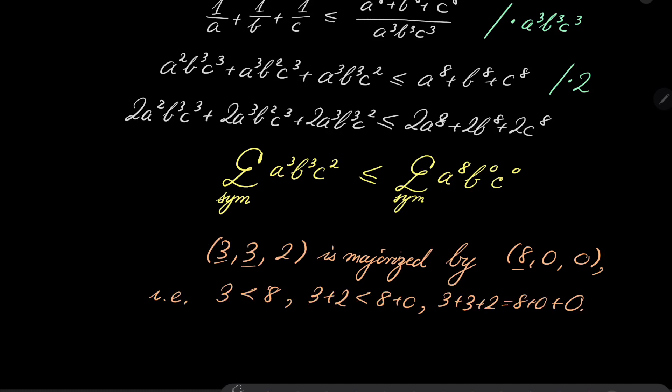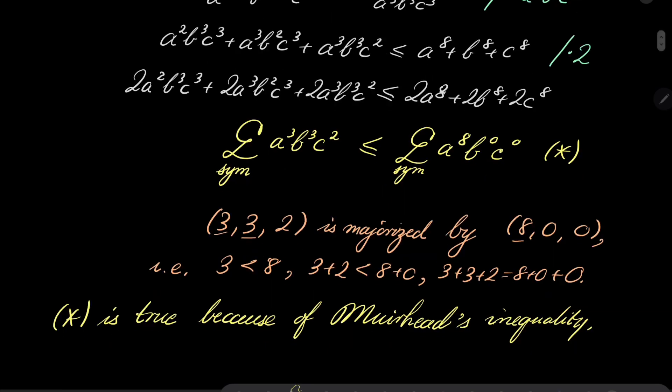So now we can use Muirhead's inequality and we can say that this inequality is true. If I denote this by asterisk, asterisk is true because of Muirhead's inequality. And this closes our problem.